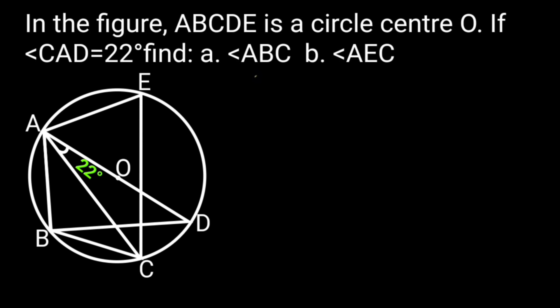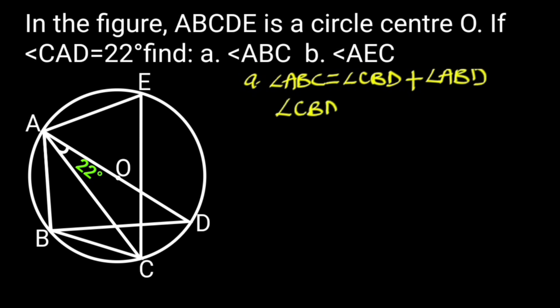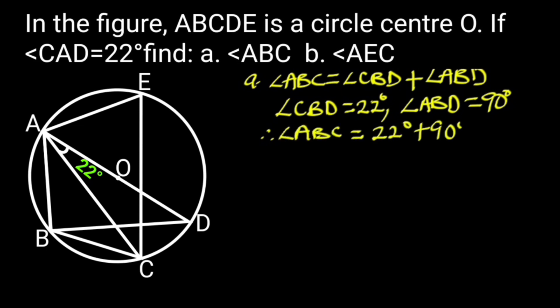If angle CAD equals 22 degrees, find A) angle ABC and B) angle AEC. Solution A: Angle ABC equals angle CBD plus angle ABD. Angle CBD equals 22 degrees. Reason: Angle in the same segment. Angle ABD equals 90 degrees. Reason: Angle in a semicircle. Therefore angle ABC equals 22 degrees plus 90 degrees, which is 112 degrees.